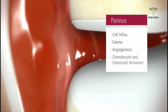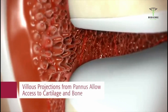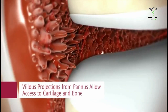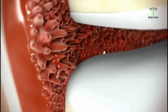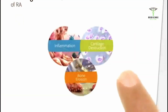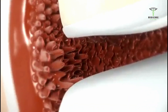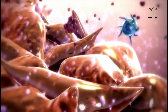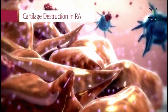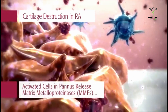These cells contribute to the growth of pannus and sustain the inflammatory cycle. The growing vascularized pannus develops villus projections that result in better access to the cartilage and bone, and therefore greater opportunity for the activated cells to release damaging inflammatory mediators and enzymes at the interface between pannus and cartilage.